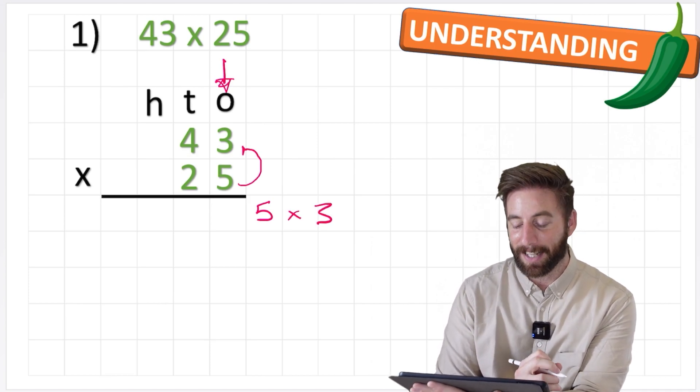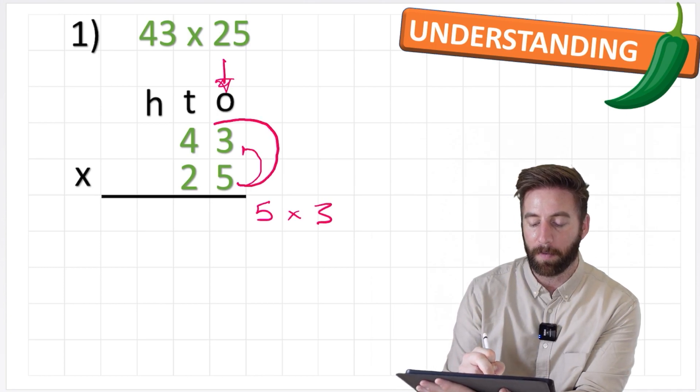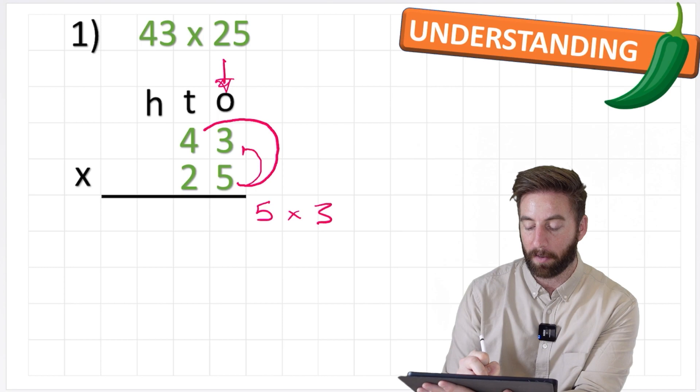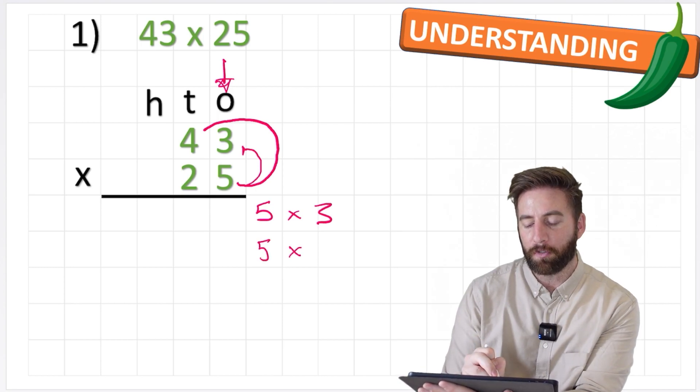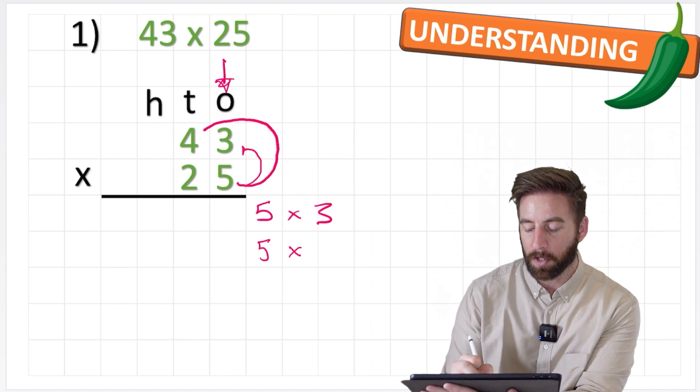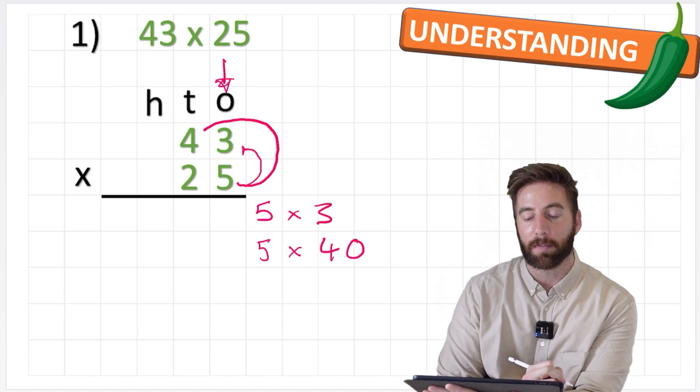Then I want to think about what's the second smallest value. Well if I continue multiplying this 5 but move up now to my tens, I'll be multiplying 5 by 4. Well it's not a 4 is it? It looks like a 4 but it's in our tens column so it holds the place of 40. So my second question is 5 times 40.